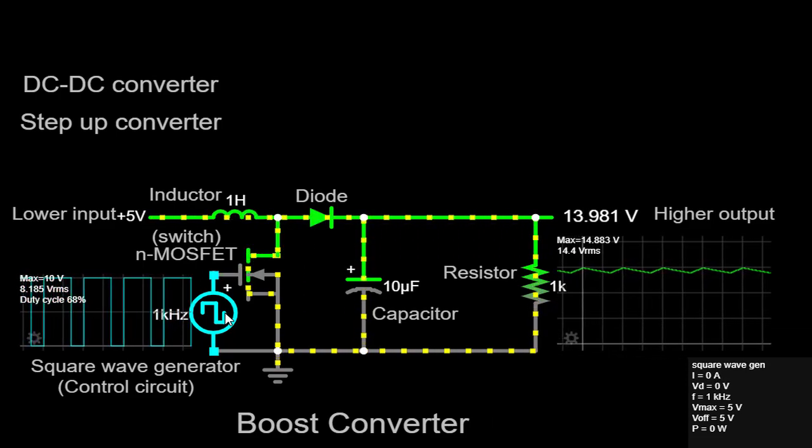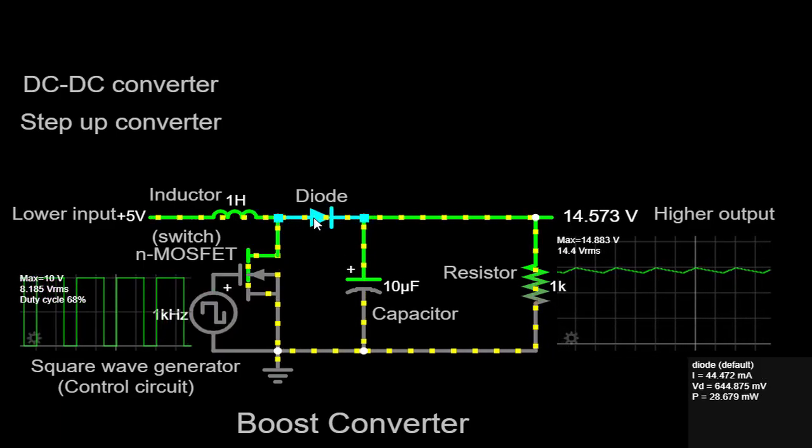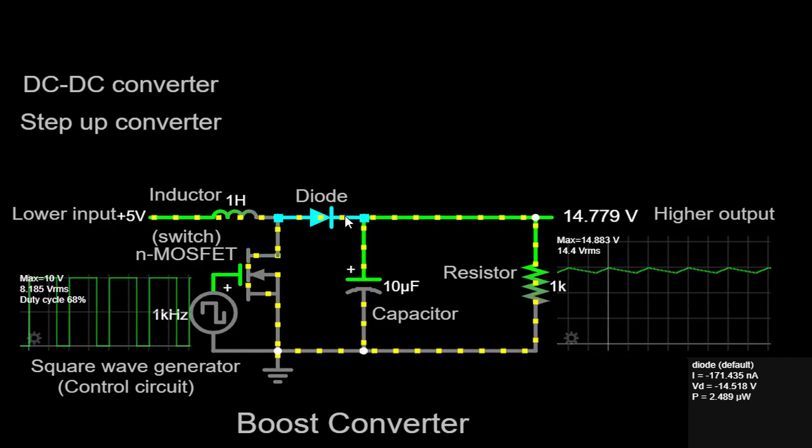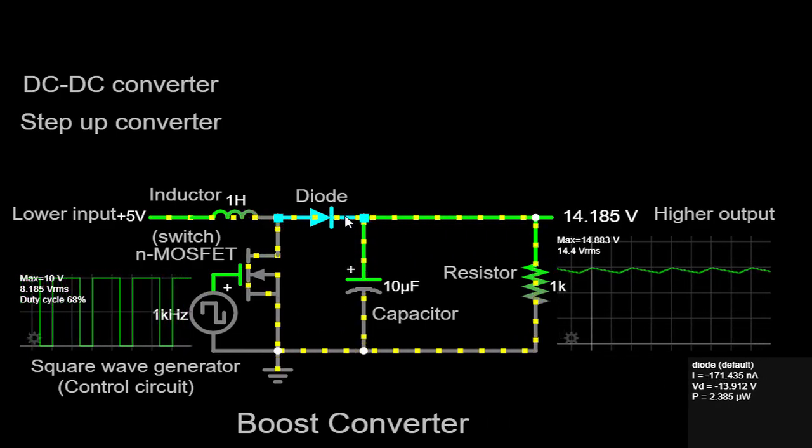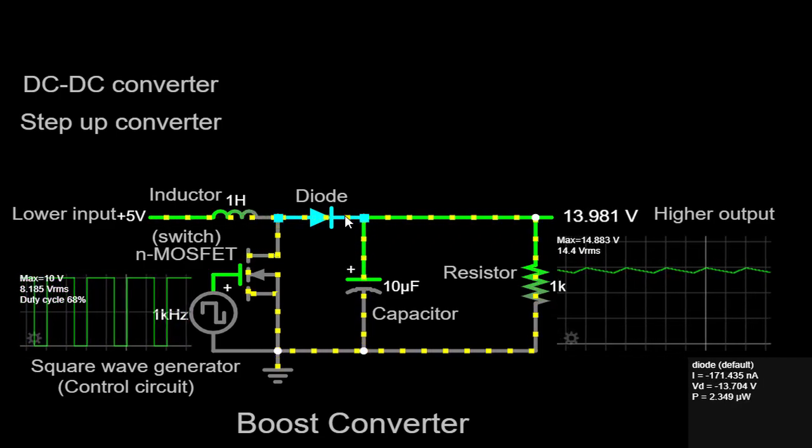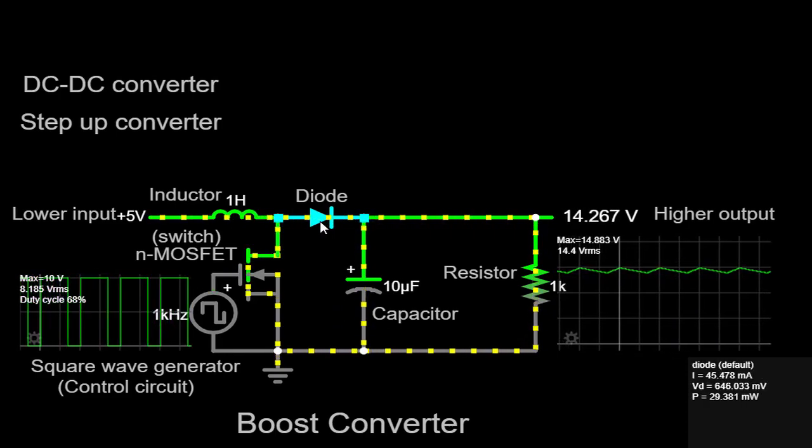To better understand the process, we have a diode connected in parallel with the inductor. This diode, commonly known as a freewheeling diode or catch diode, provides a path for the inductor's stored energy to circulate when the MOSFET is turned off. It allows the current to flow in only one direction, preventing any reverse flow and protecting the MOSFET.